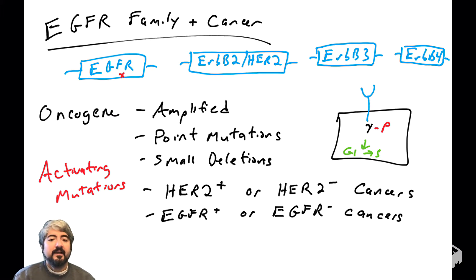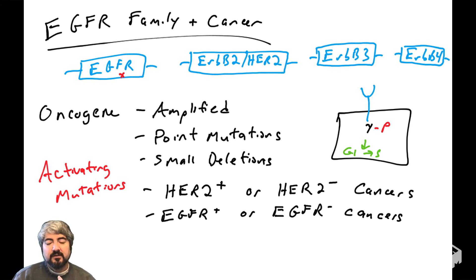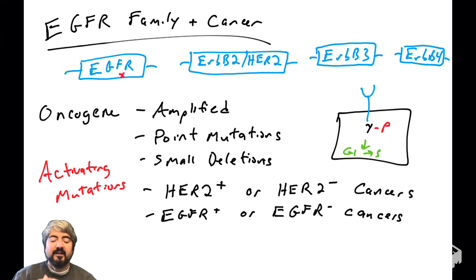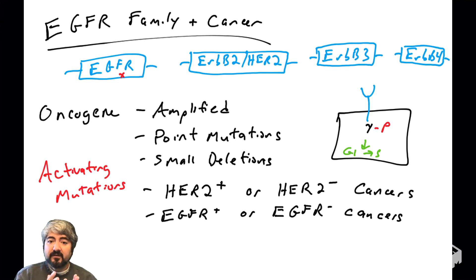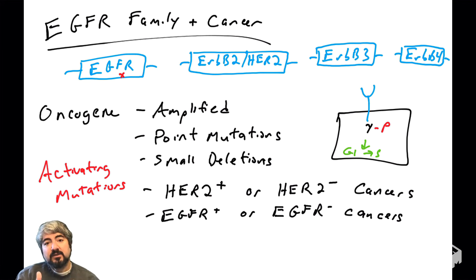When cancers are characterized as something positive or negative, it refers to whether there is a mutation in that gene driving the proliferation of those cells. A HER2 positive cancer has a mutation — probably an amplification — in the HER2 gene, leading to overexpression of the protein and phosphorylation of cytoplasmic tyrosines. A HER2 negative cancer means this gene is not mutated and not driving proliferation. This helps clinicians design a treatment plan: if a cancer is HER2 positive, it makes sense to target the HER2 protein.